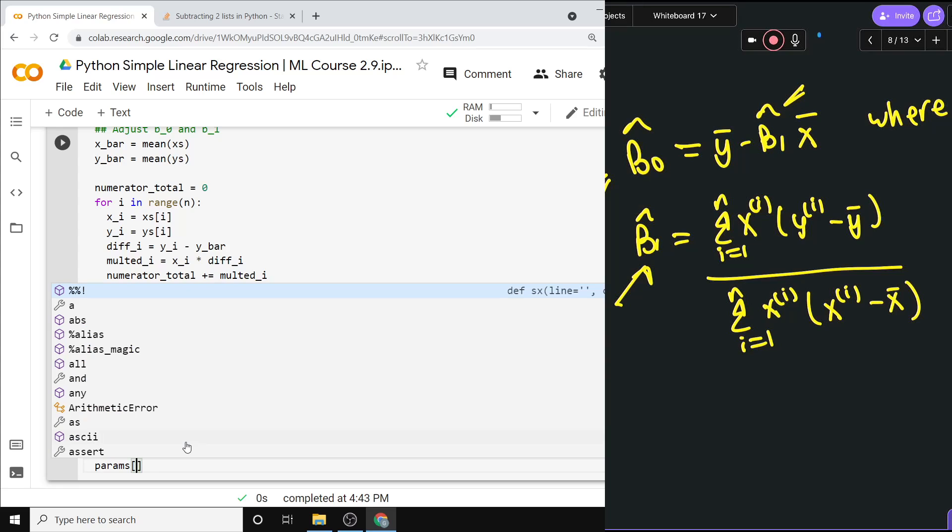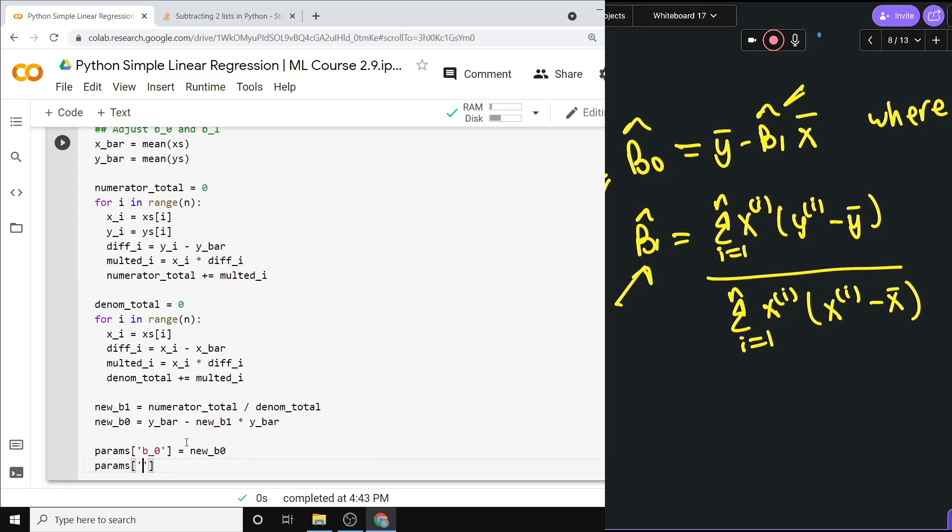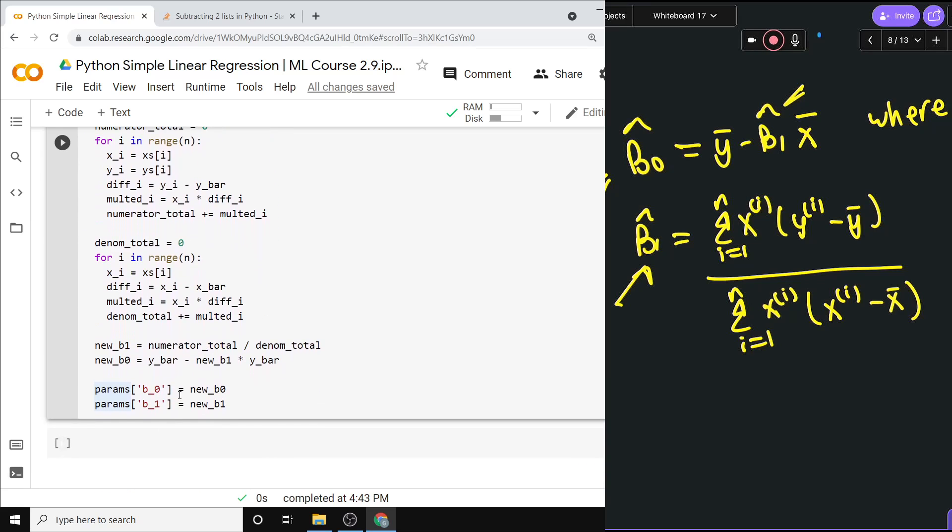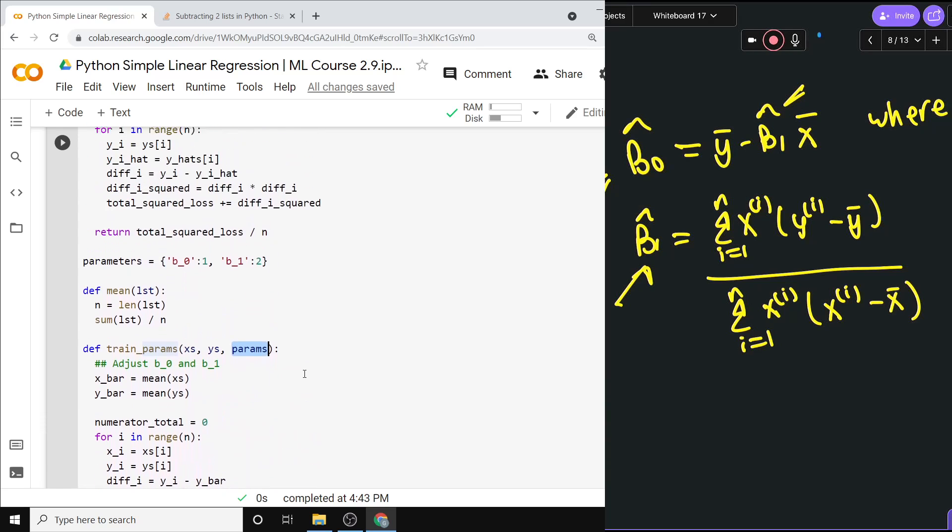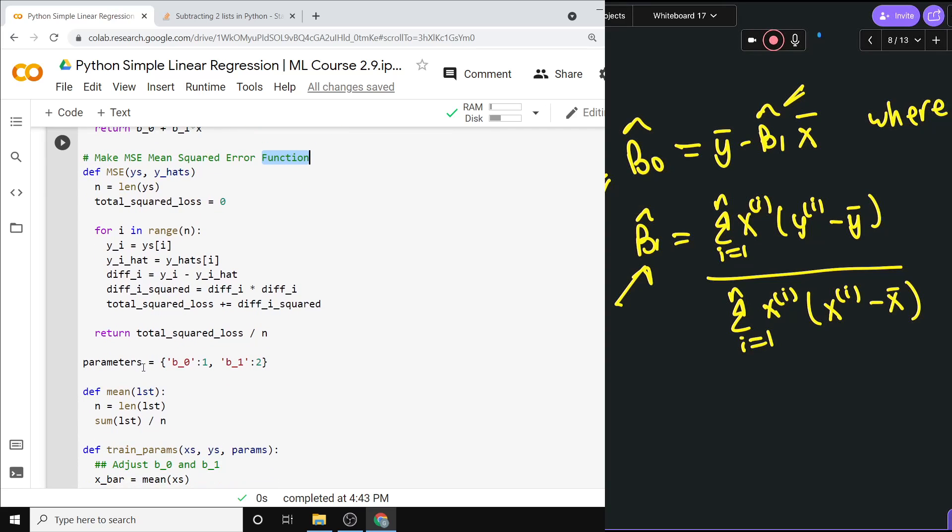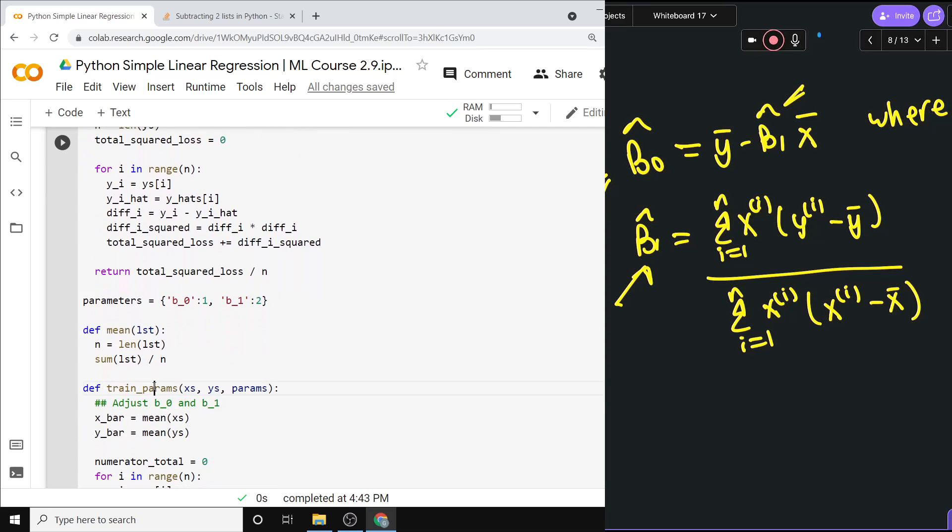And then we'll set params['beta_1'] equal to new_beta_1. And that function is done, because that changes the dictionary, that changes the values to what we want them to be. So there you go, those are the main pieces: the prediction function, the mean squared error, and the training of the parameters. And I'll see you in the next video when we do a little bit more with this kind of stuff.